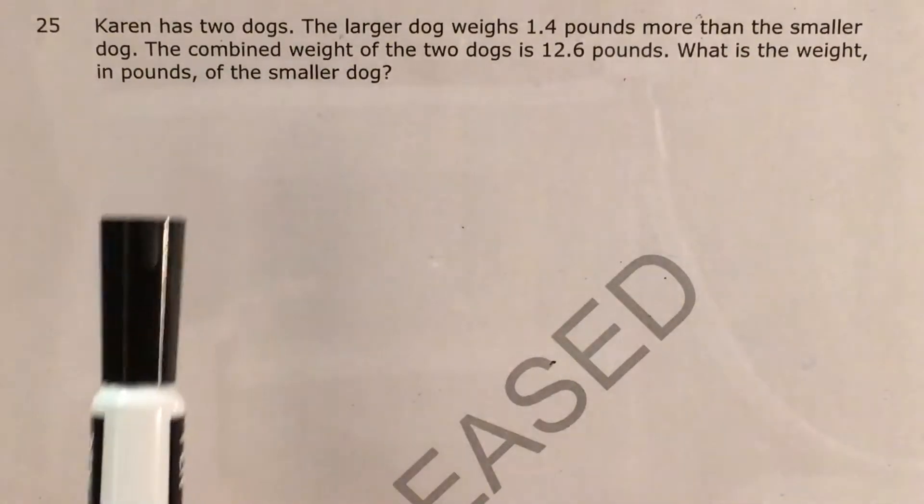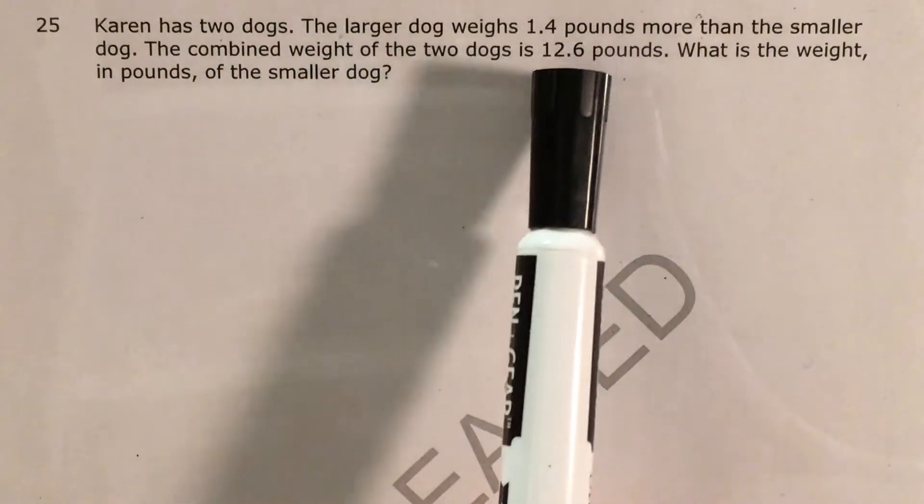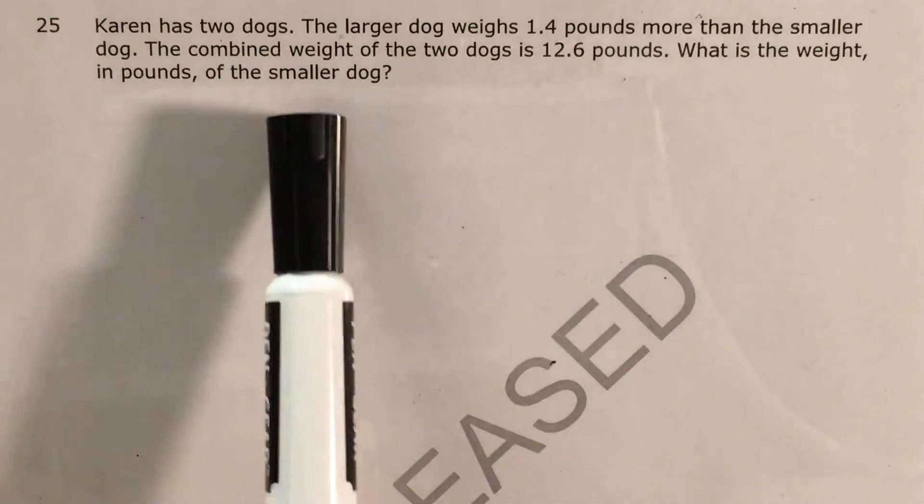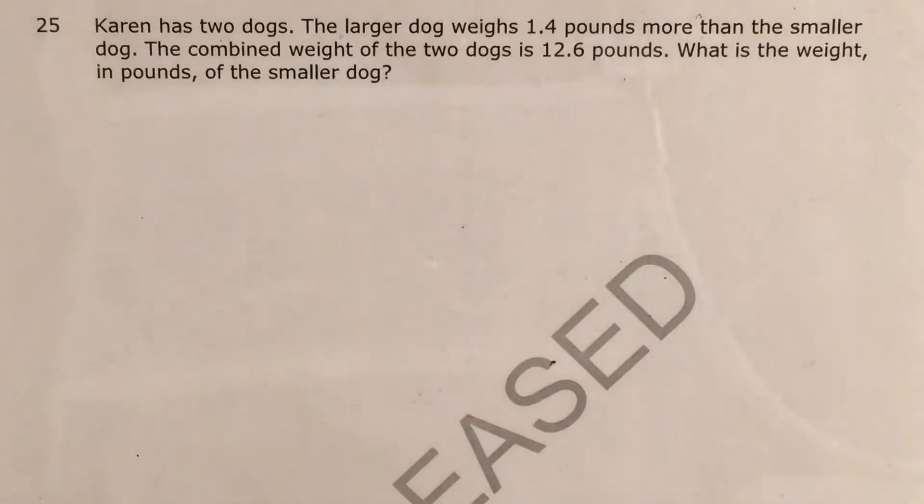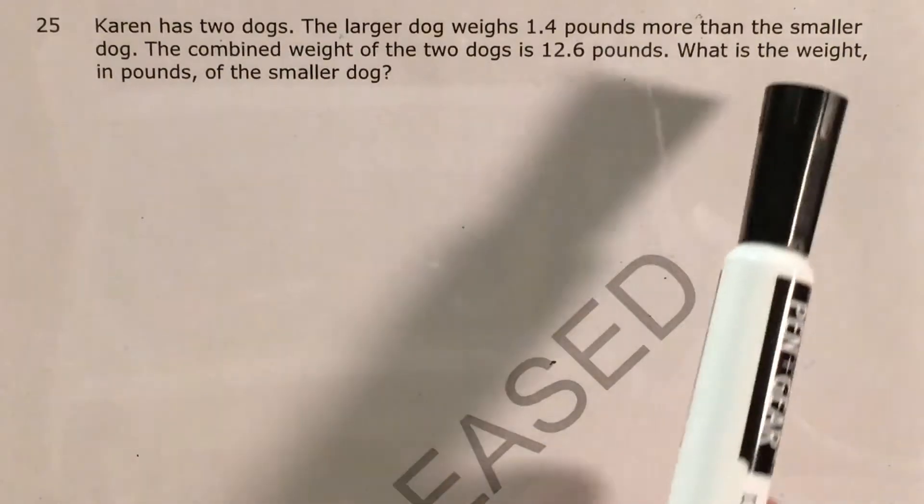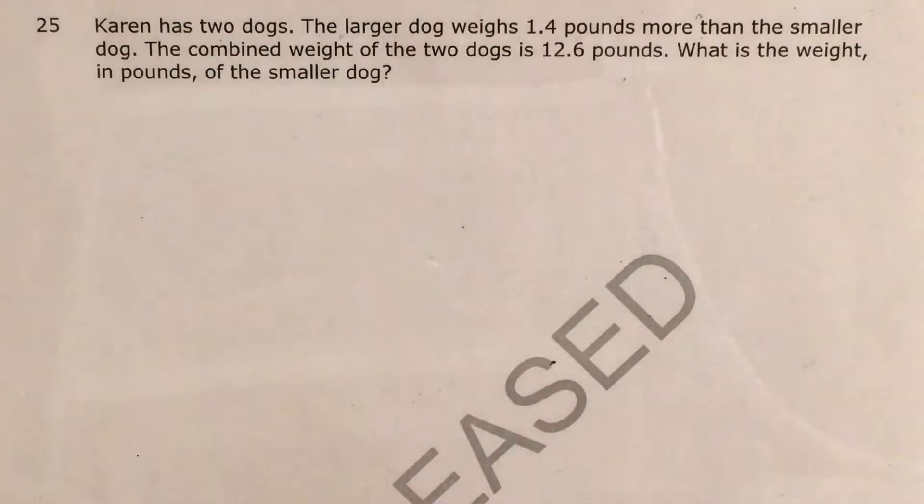Today we're going to tackle question 25 in the Math 1 questions that North Carolina released this past school year. The question tells us that Karen has two dogs. The larger dog weighs 1.4 pounds more than the smaller dog, and the combined weight of the two dogs is 12.6 pounds. We're trying to find the weight in pounds of the smaller dog.